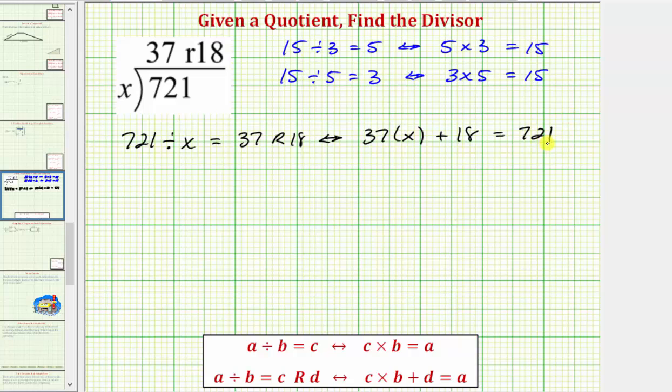Now using the commutative property of multiplication, if 37 times x plus 18 equals 721, then x times 37 plus 18 would also equal 721.